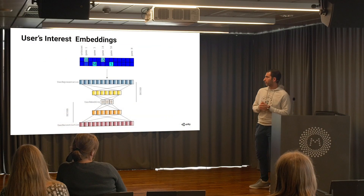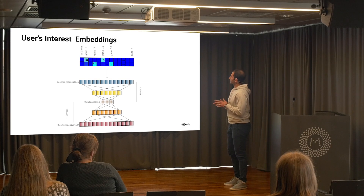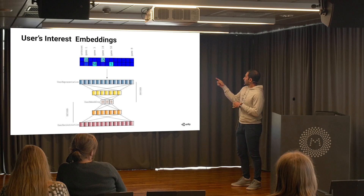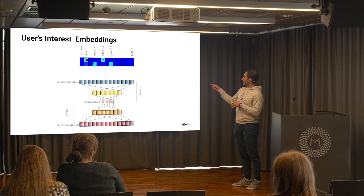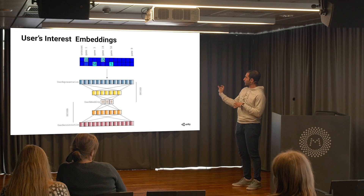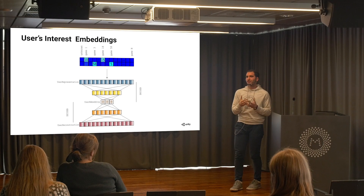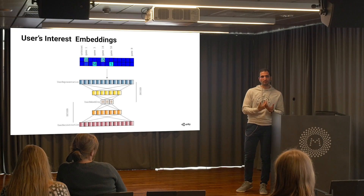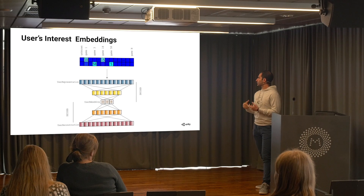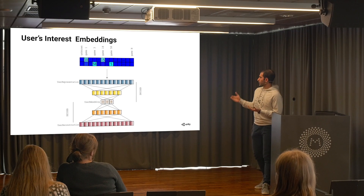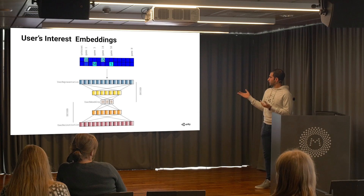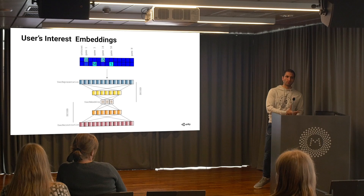The two users I talked about go through this network — projected to a lower dimension in the first layer and to a second lower dimension in the third layer. We use that as the user embedding, the dense user representation, in our neural network. To train, we reconstruct the user representation using the decoder part of the network.